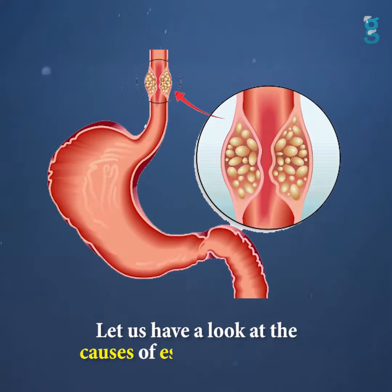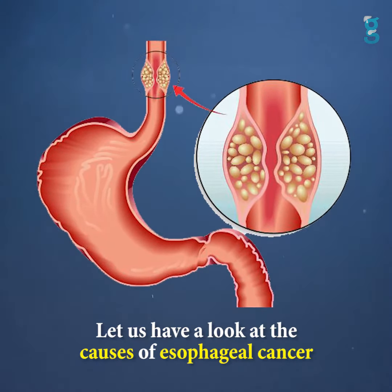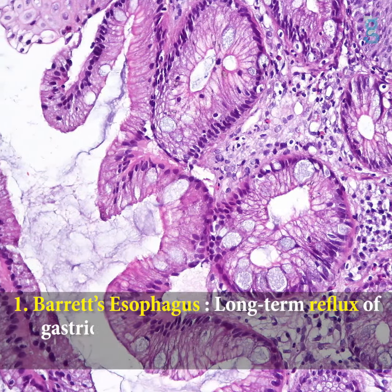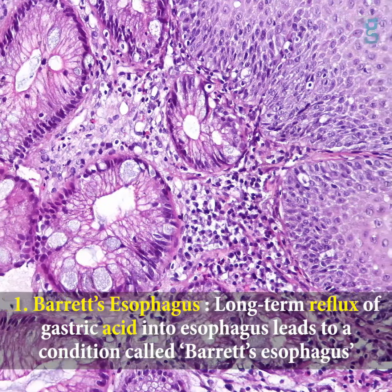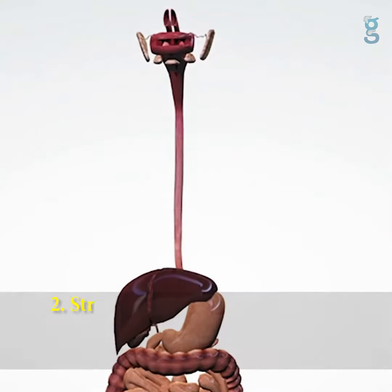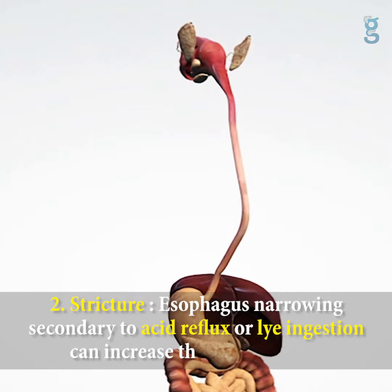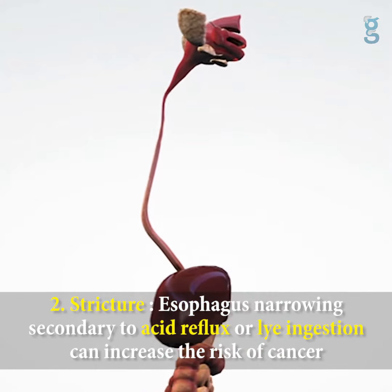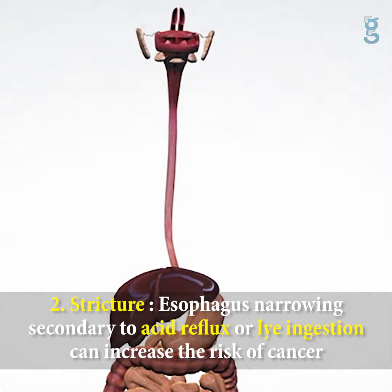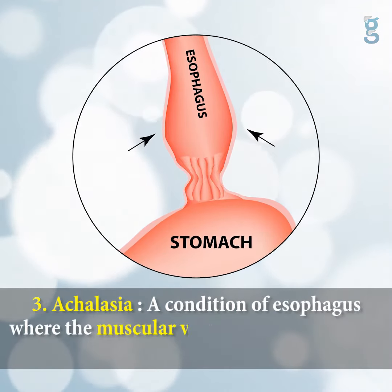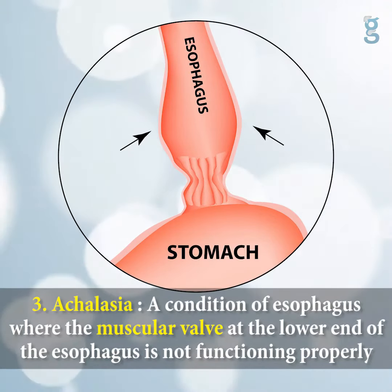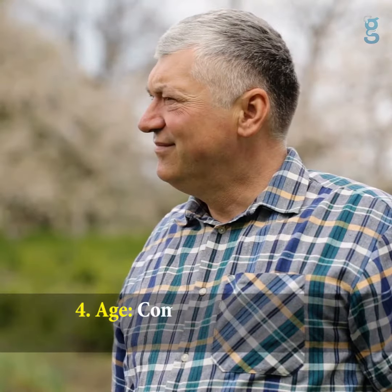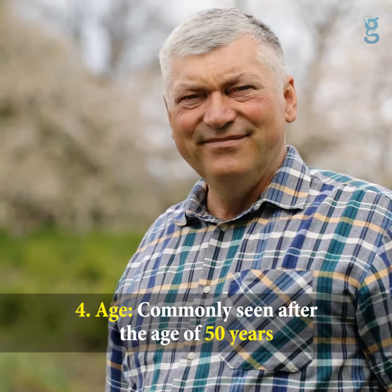Let us have a look at the causes of esophageal cancer. One: Barrett's esophagus — long-term reflux of gastric acid into the esophagus leads to a condition called Barrett's esophagus. Two: Stricture esophagus — narrowing secondary to acid reflux or lye ingestion can increase the risk of cancer. Three: Achalasia — a condition of the esophagus where the muscular valve at the lower end is not functioning properly.